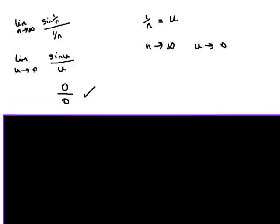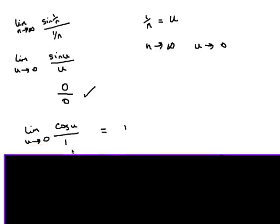I noticed that actually I've got something where I can use L'Hopital's rule because I've got, this will be a 0 over 0. So I can therefore differentiate the function, which gives me cos u over 1. And then as u approaches 0, this gives me an answer of 1.